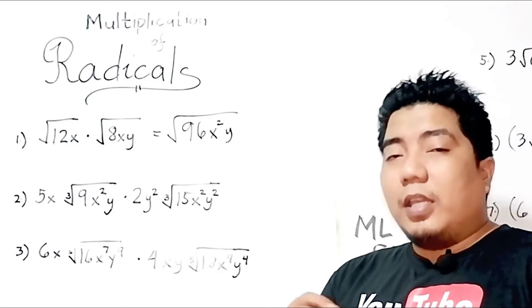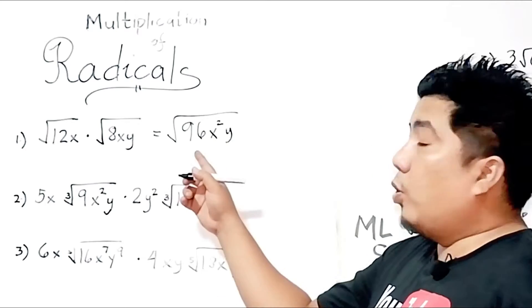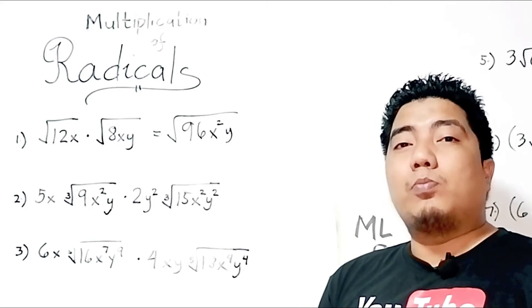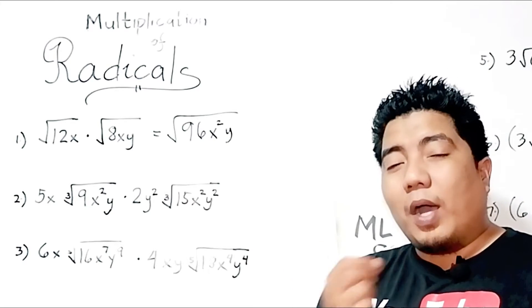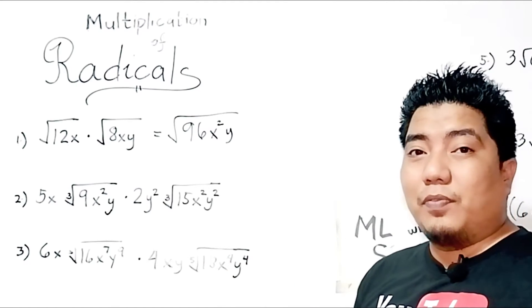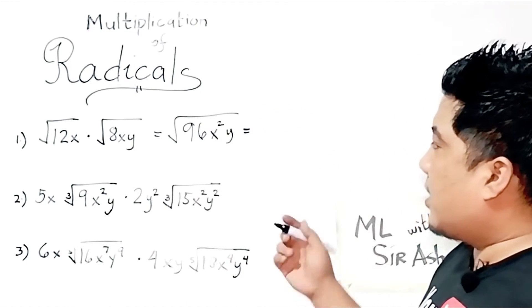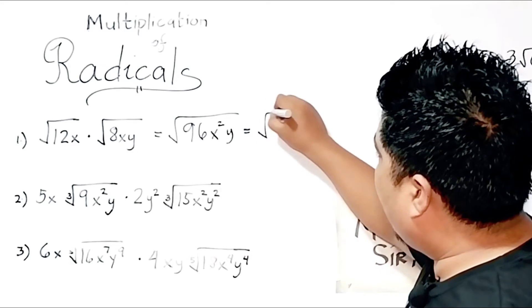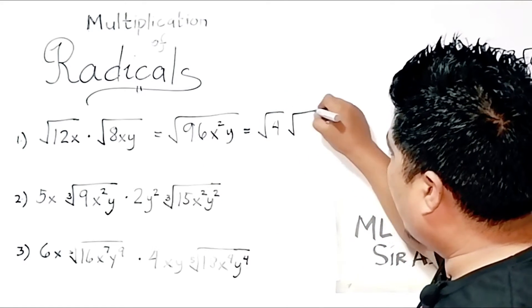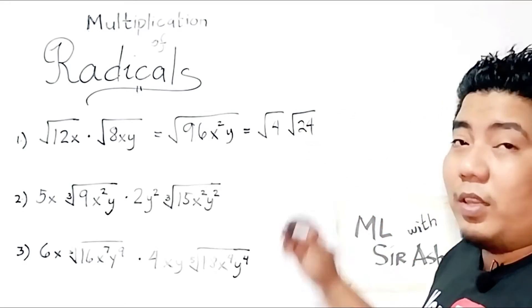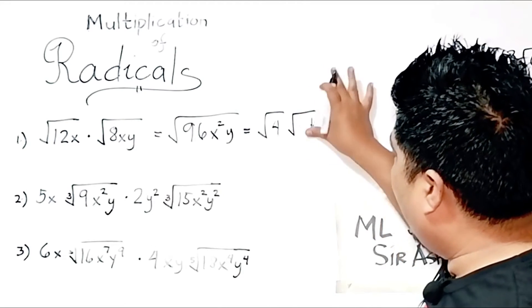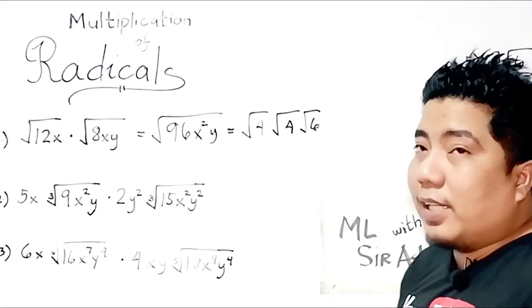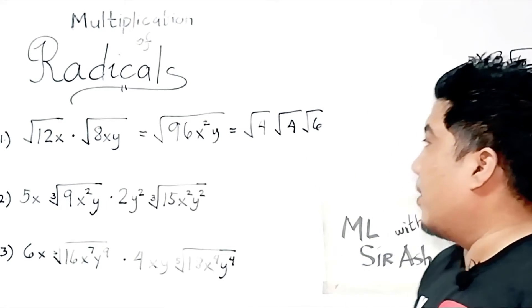My dear math learners, if you can still simplify your answer, you need to simplify it. Though 96 is not a perfect square, you can still factor it into smaller pieces where one factor is a perfect square. What are the factors of 96? If we factor 96, starting with 4 — yes, it is divisible by 4 — that gives the square root of 4 times the square root of 24. However, 24 can still be broken down, so we break down our 24 into 4 and 6. Since 6's factors are not perfect squares, we stop there.